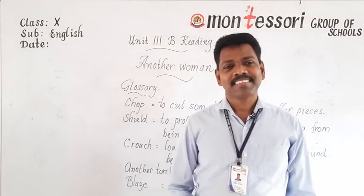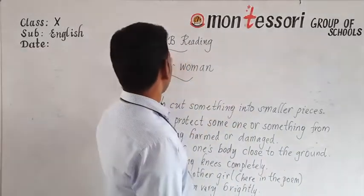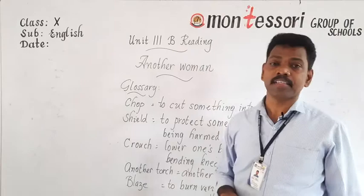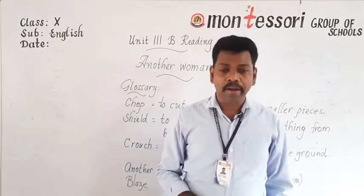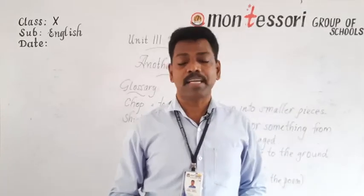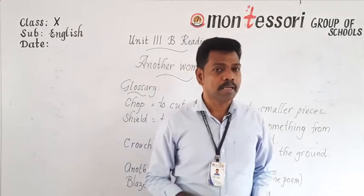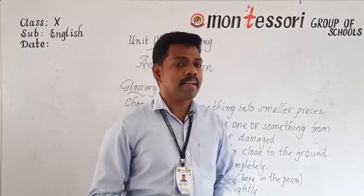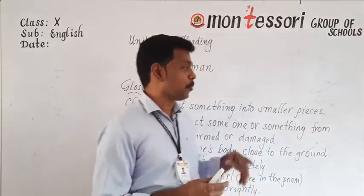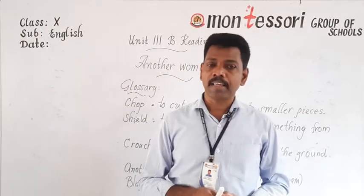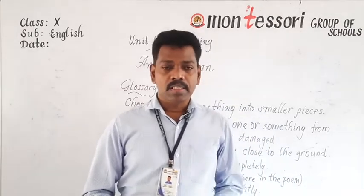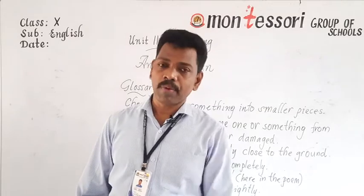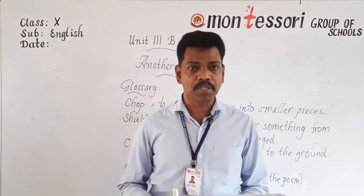Welcome back to English class. Today we are going to learn Unit 3B: reading 'Another Woman.' The poem is written by Imtiyas Dharker. He was born in Pakistan and brought up in Glasgow, Scotland. The poet is representing all the women in the world through this poem. The hardships they face in their in-laws' house is brought out through this poem. I will read each stanza and then explain it.